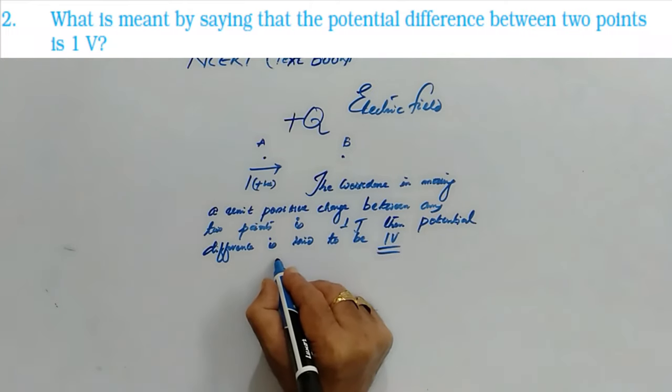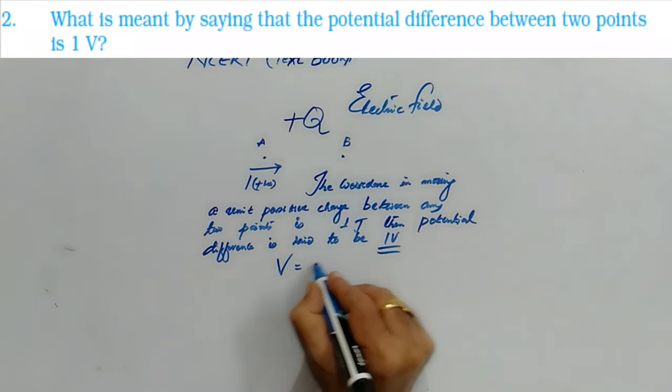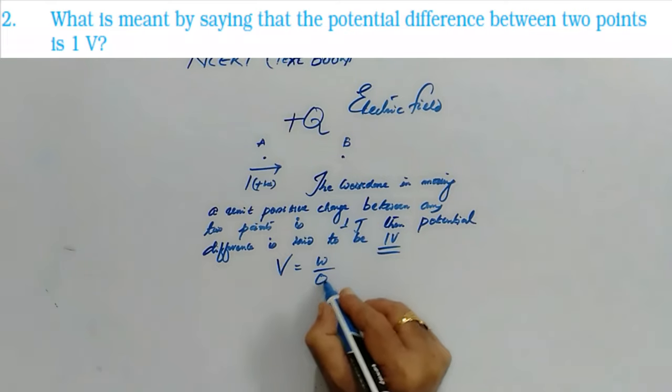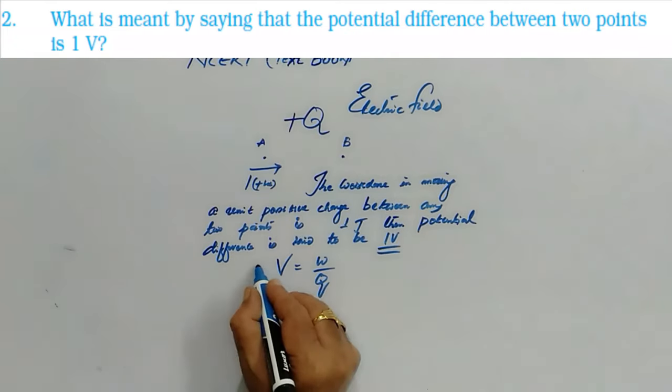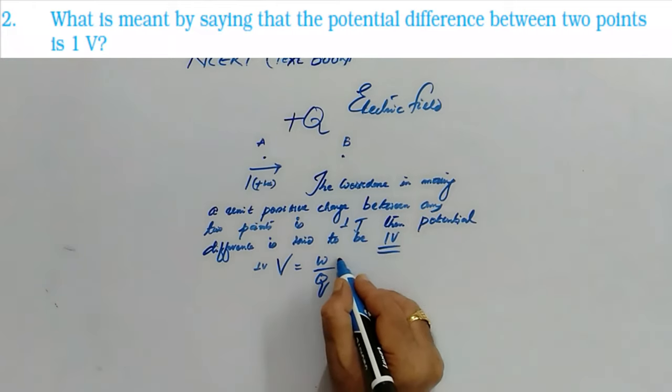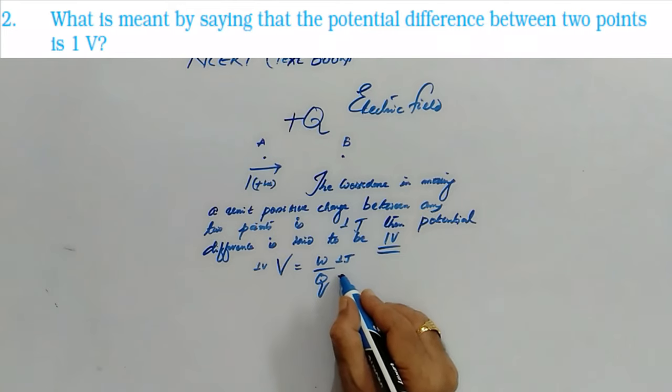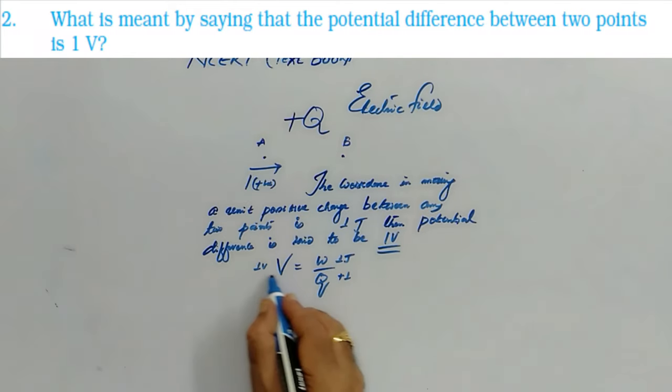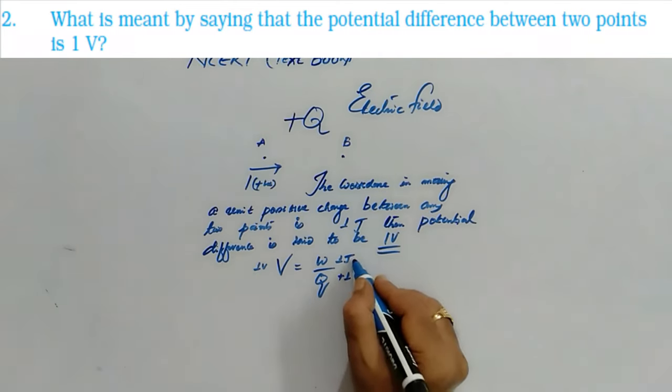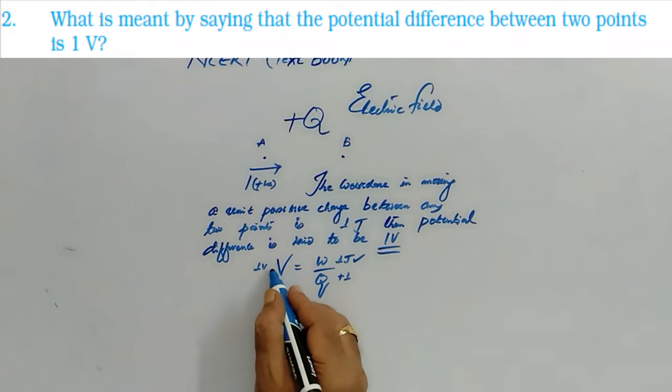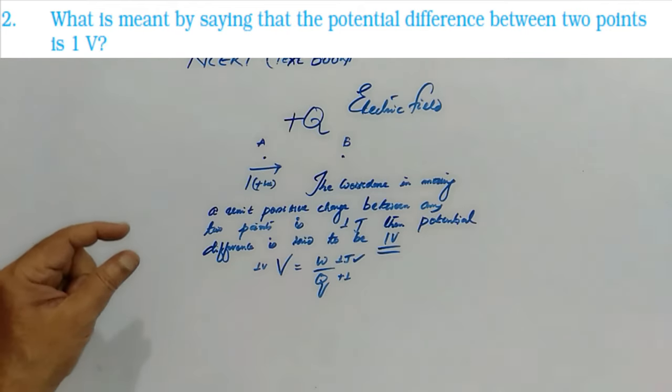We have written the formula: potential difference is equal to W by Q. If I make this Q as 1 and if it is to be 1 V, it should be 1 joule. If Q is unit positive charge and V is 1 V, then obviously W is equal to V into Q, which is 1 V into 1 coulomb, which gives us 1 joule. So this is the definition of potential difference.